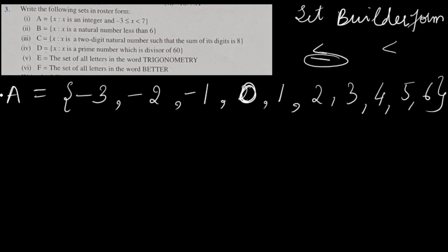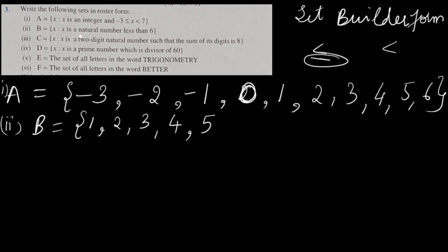The second part is set B. B = {X such that X is a natural number less than 6}. Natural numbers start from 1, 2, 3, 4, and 5 — because X is a natural number less than 6, so we write only up to 5. 6 is not included here.